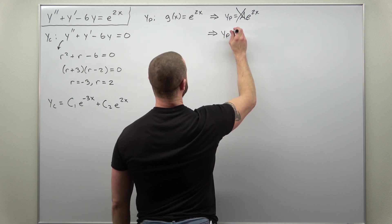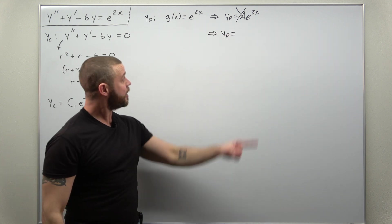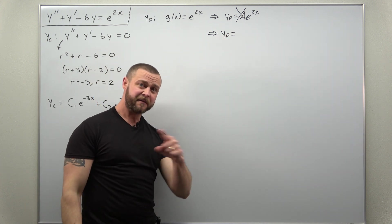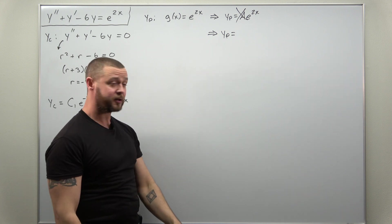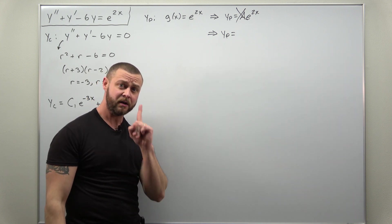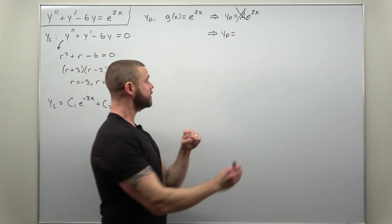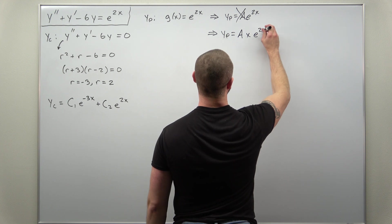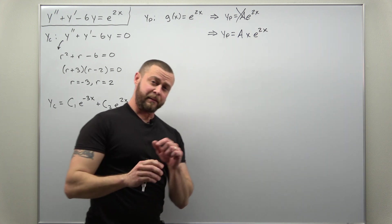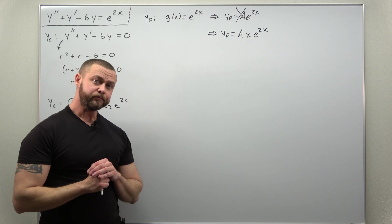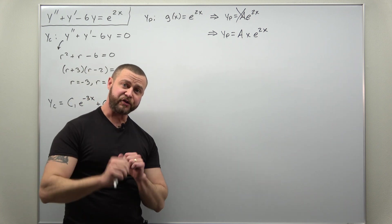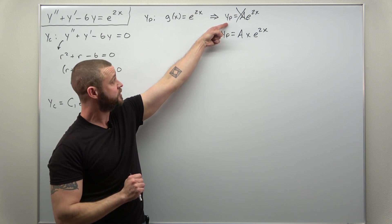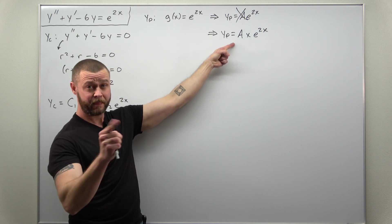Our fix is we take our initial choice and multiply it by a factor of x for each term that's duplicated. Here we only have one term being duplicated, so we just need one factor of x. We're going to try yₚ = Axe^(2x). And that right there, that's the tricky part, just making sure you understand why this choice for the particular solution doesn't work, but this one does.